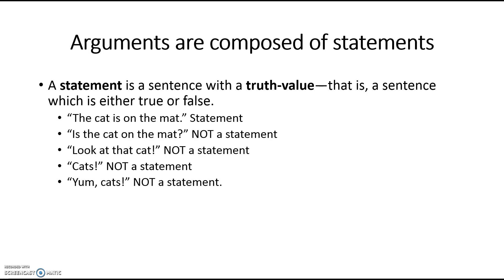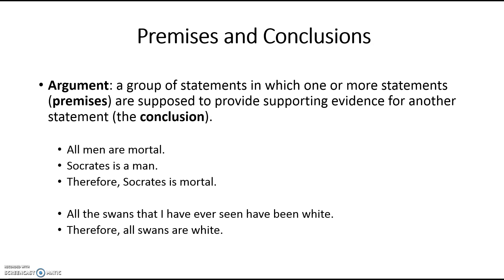Other kinds of sentences without truth values include commands, like 'look at that cat' — that's not true or false — or just an exclamation like 'cats' or 'young cats.' Those are neither true nor false. Therefore, they're not statements, and they're not part of an argument. An argument is a group of statements in which one or more statements, the premises, are supposed to provide supporting evidence for another statement, which we call the conclusion.